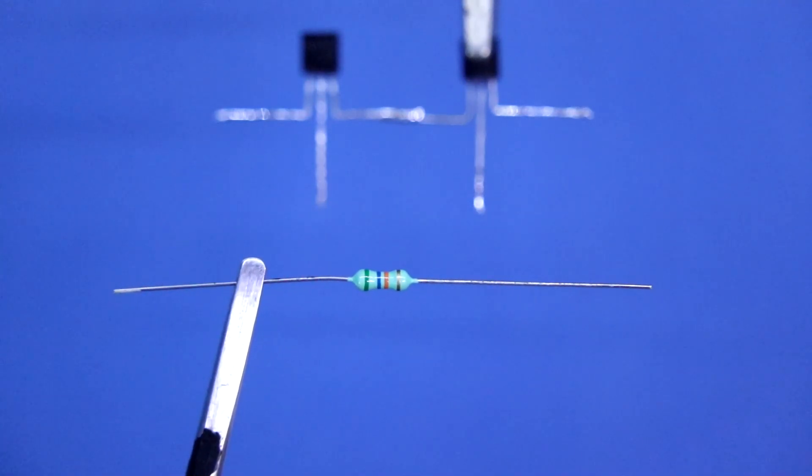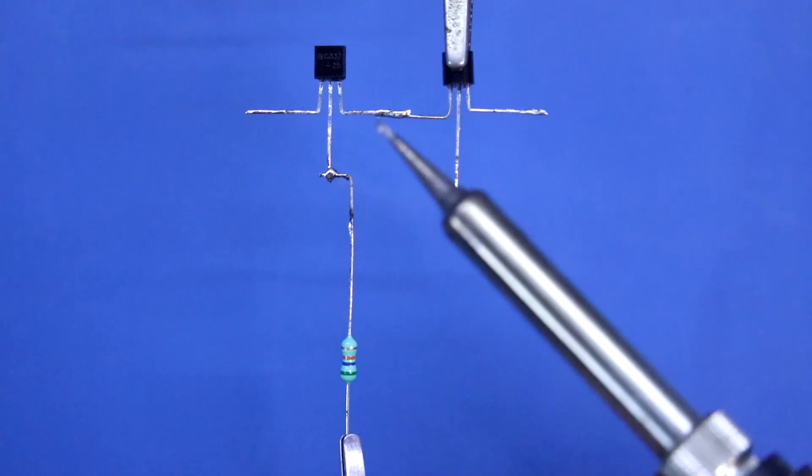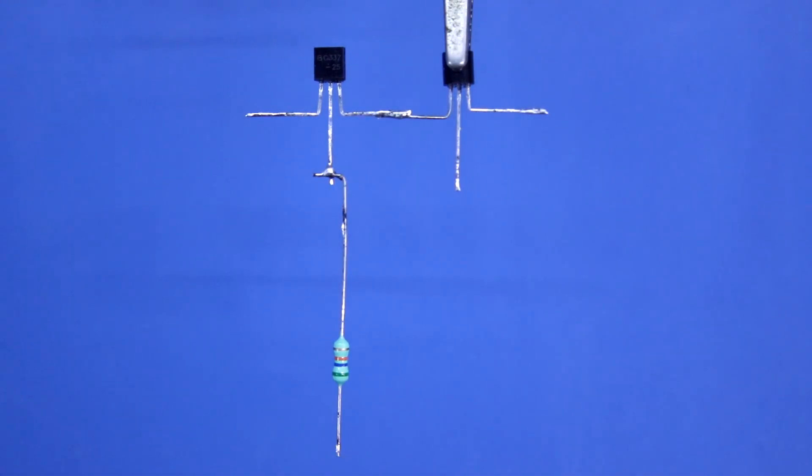Now we need a 56 kilohm resistor and we have to solder this resistor to the base of the transistor. Here is one resistor and this is the other one.